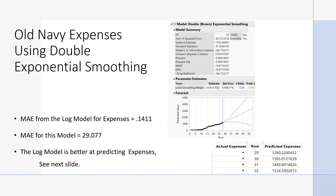Here I tried the time series model — double exponential smoothing — with the expense data. The MAE here is 29.07, which is quite a bit larger. Therefore, the exponential log model was the better one at predicting expenses. If the double exponential smoothing model had been good, I could go out to the data and predict into quarter 4 what expenses would be.